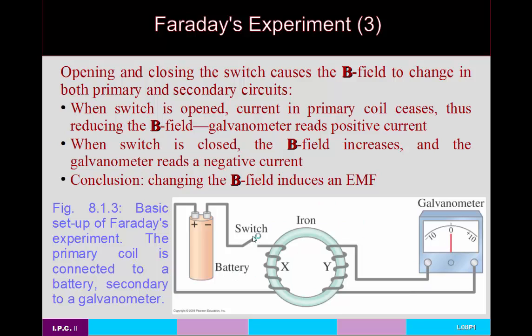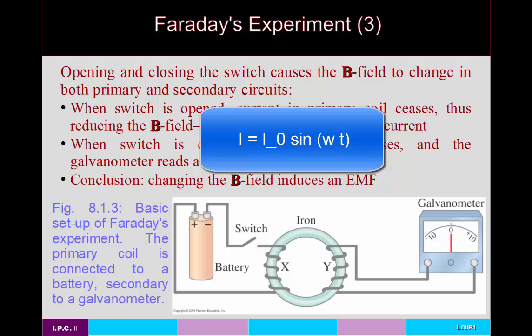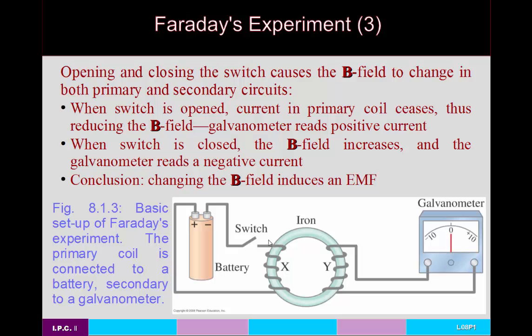Faraday's experiment used a single battery and switch — a DC source. But you could also imagine removing the switch and hooking up an AC source. What would happen is that the current would be changing according to the equation for alternating current: current equals some maximum current times the sine of some angular frequency times time. That would also produce a changing current, hence a changing magnetic field, and you'd get some induced current with interesting changes in the galvanometer reading throughout.